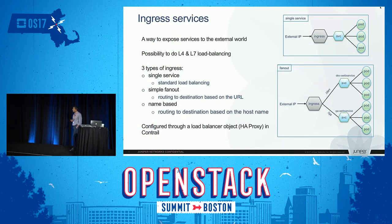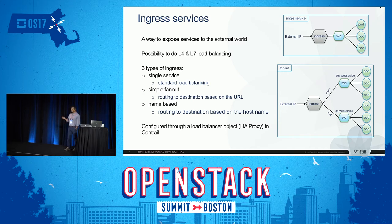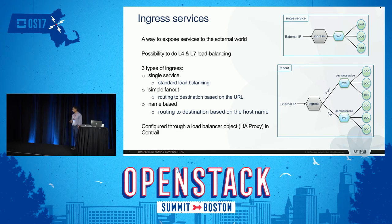Here's an example of ingress implemented using HAProxy. When you access a URL with an external IP — say xyz.com going to /dev — it is automatically routed via HAProxy into the dev web service or QA web service. We have single service and simple fanout name-based load balancing available for ingress. On the backend, when you go to a service, we use ECMP load balancing — effectively two levels of load balancing.